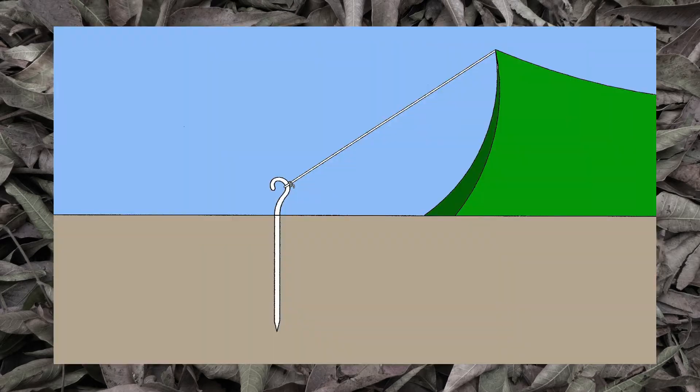Notice how the tent stake is vertical. That's an intuitive thing to do, and for wedding tents it's the correct thing to do, but it's not the right approach for a backpacker's wire stakes. Here's why.